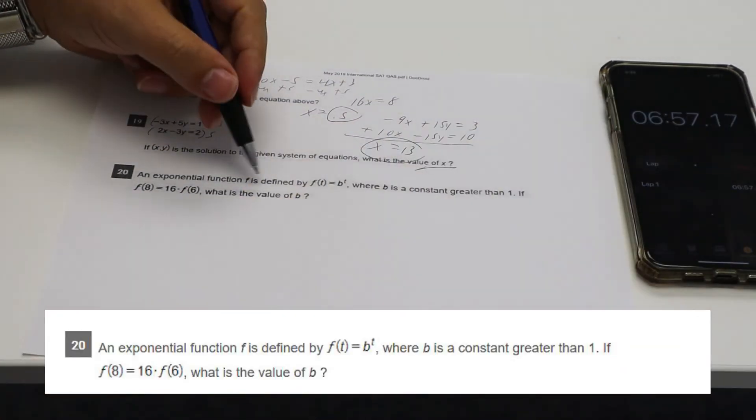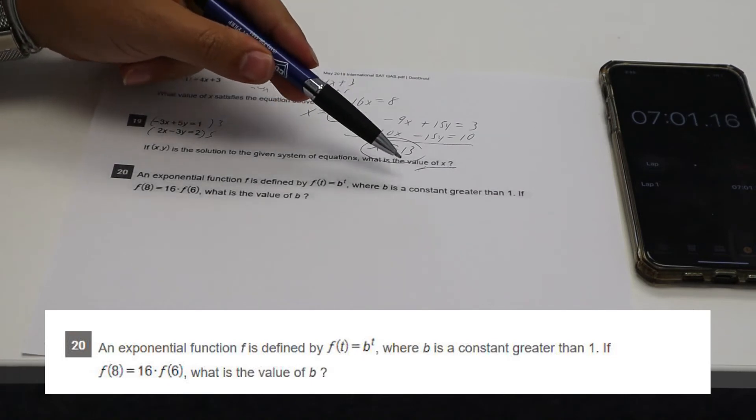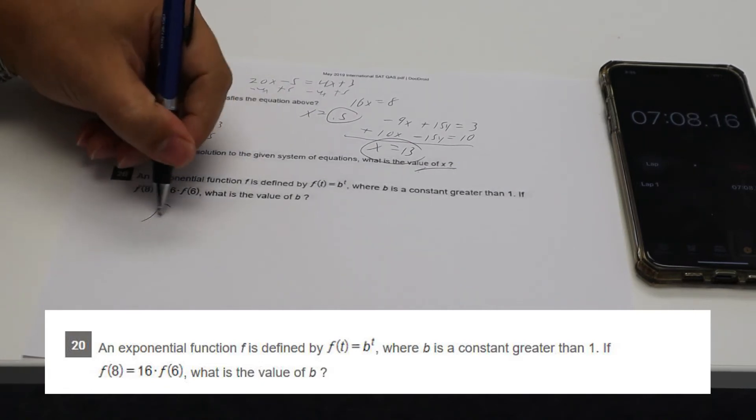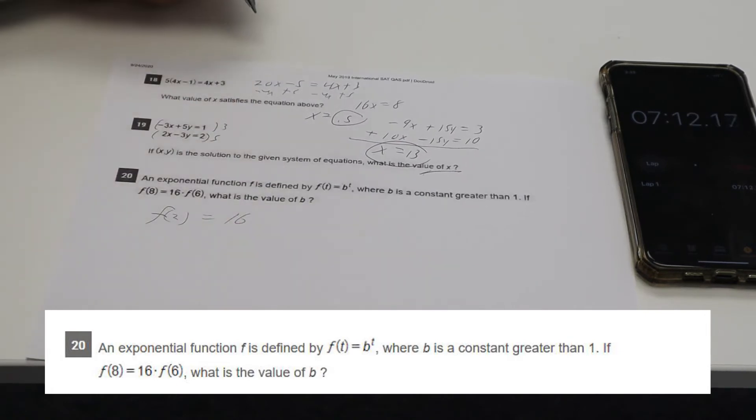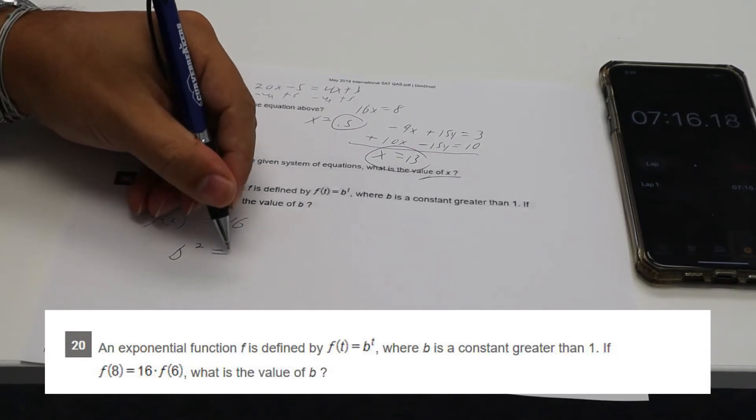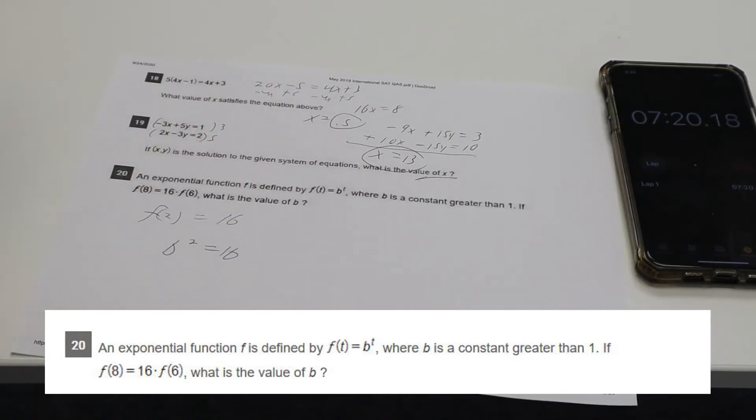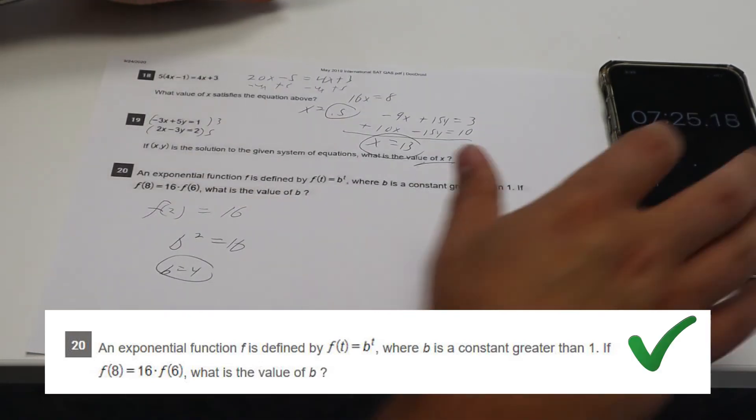Exponential function F is defined as F of T equals B to the T where B is a constant greater than one. If F of eight equals 16 times F of six. So I guess F of two equals 16. So B to the two equals 16. Because if you multiply those, that would make sense. B to some power. So B equals four.